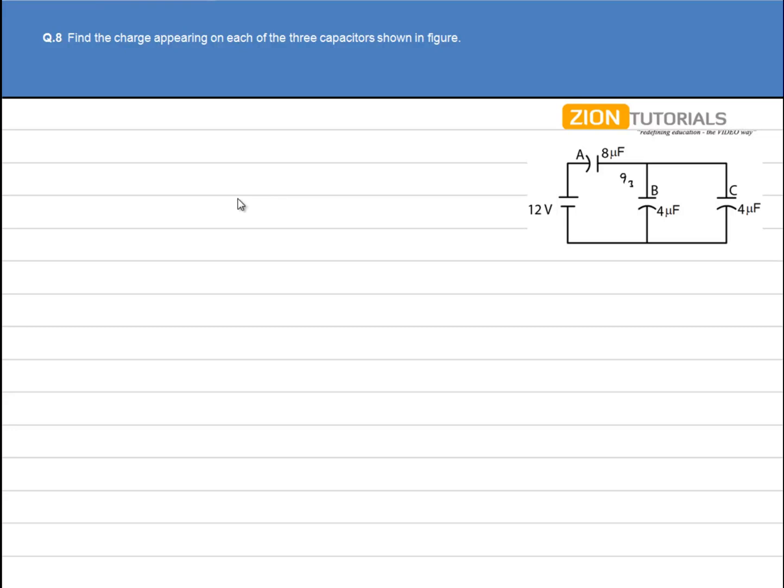Find the charge appearing on each of the three capacitors as shown in figure. This question can be easily solved by the concept that if two capacitors are in series, they will have the same charges on their plates. And if two capacitors are in parallel, they will have the same potential difference across their plates.